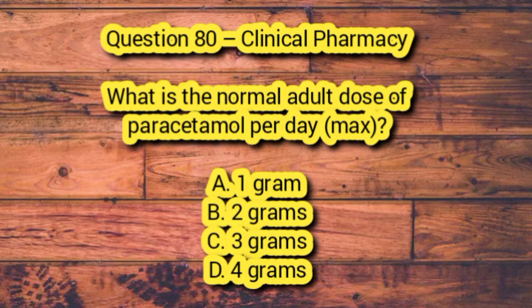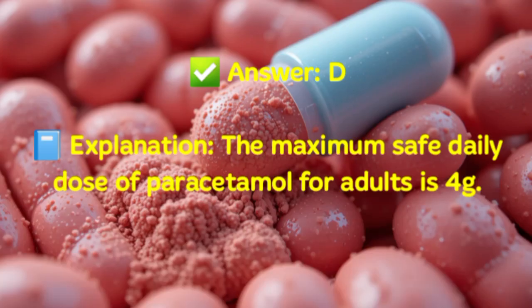Question 80 – Clinical Pharmacy. What is the normal adult maximum daily dose of paracetamol? A. 1 gram. B. 2 grams. C. 3 grams. D. 4 grams. Answer: D. Explanation: The maximum safe daily dose of paracetamol for adults is 4 grams.